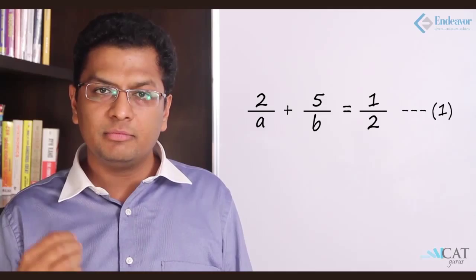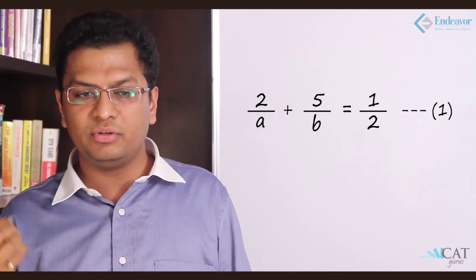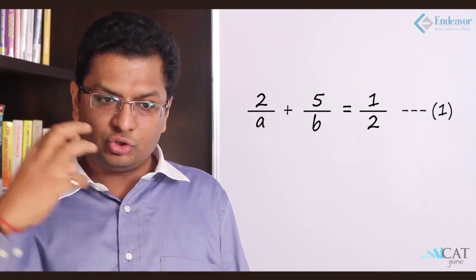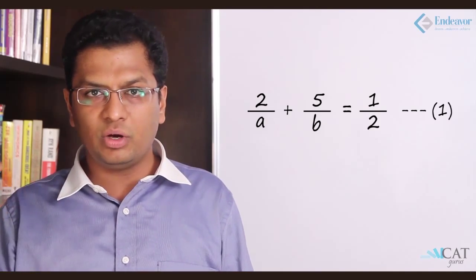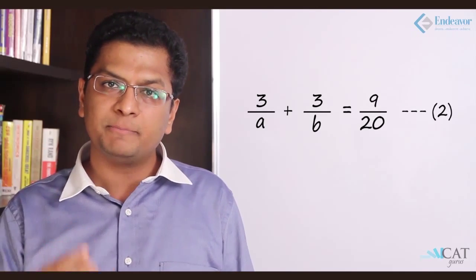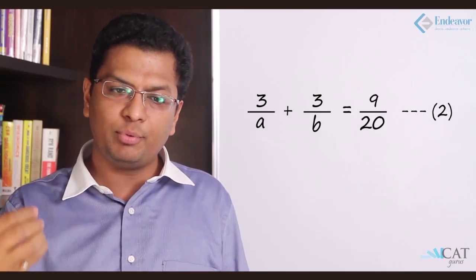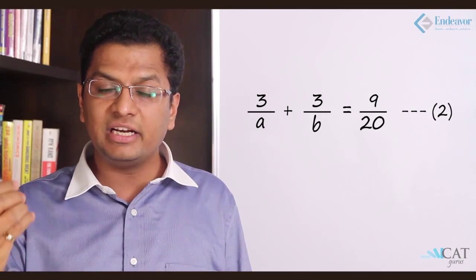Now 2 hours of A and 5 hours of B means half the job. The 3 hours of both of them combined will be what? Let's assume that A completes the job in A hours and B completes the job in B hours. So in 2 hours, 2 upon A of the work is done plus in 5 hours, 5 upon B of the work is done, equals half. So 2 upon A plus 5 upon B is equal to half. Similarly for the second part, 3 upon A plus 3 upon B is equal to 9 upon 20.